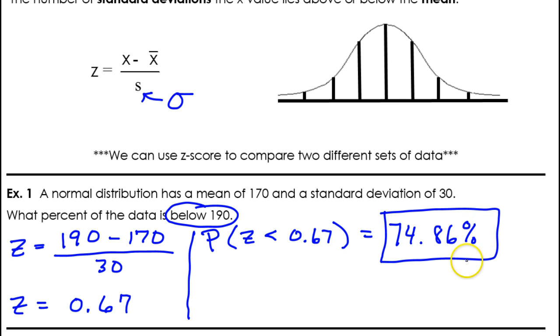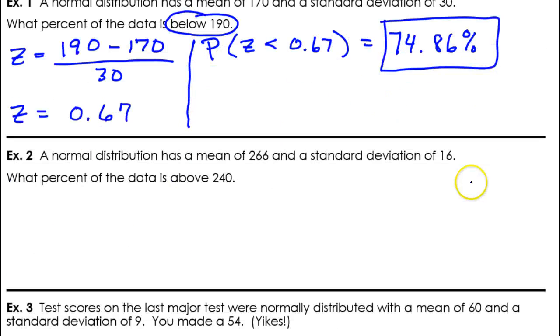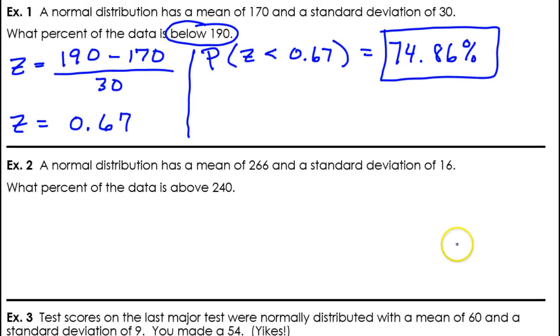That's all there is to it. Any questions on example one? Okay. Looking at example two. Normal distribution. Mean is 266. Standard deviation 16. What percentage of the data is above 240? So, again, let's find our z-score.